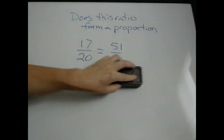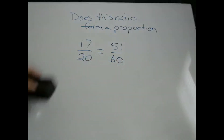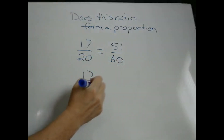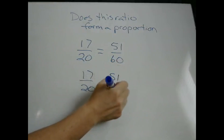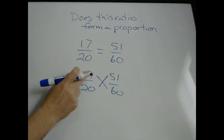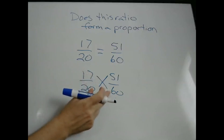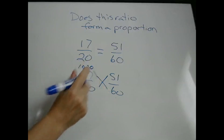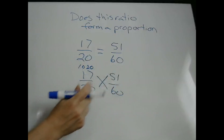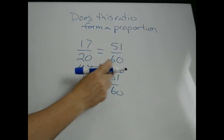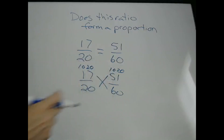The other way we can do this is cross-multiplying, as we did before. Here we have 17 times 60, which is 1,020, and 51 times 20 is also 1,020. These two numbers are equal, so these two fractions are equal and do form a proportion.